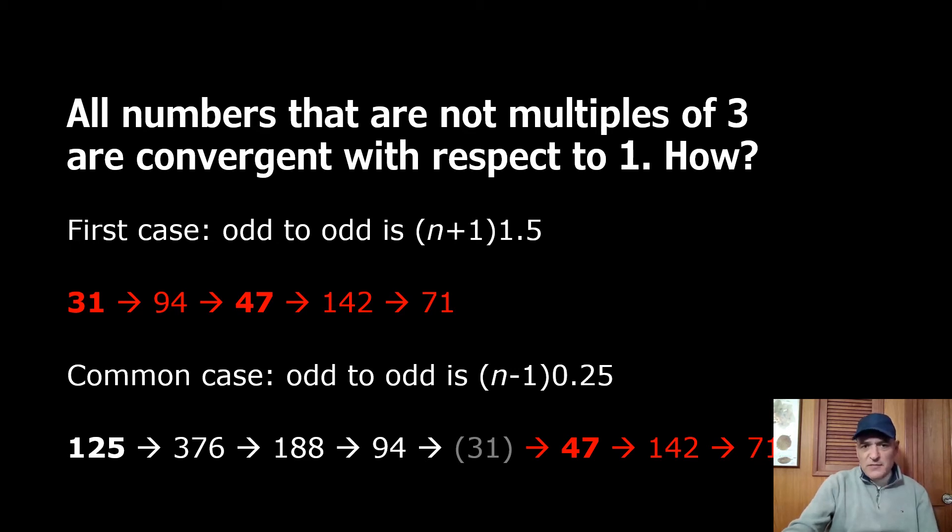If we want to use even numbers as well we see how it works. In the common case 125 becomes 47 but you don't see that at all with the even odd sequence because we have this hidden 31. In the first case 31 is the first number in the sequence. In the common case 31 is hidden in the even odd sequence but you understand that in both cases we get to 47.